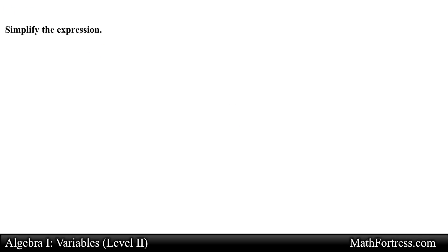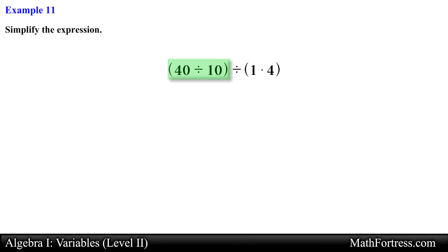Let's try the next one: simplify the quantity (40 divided by 10) divided by (1 times 4). We simplify the expressions within the parentheses first. The left parentheses simplifies to 4 and the right expression within the parentheses also simplifies to 4. So now we need to simplify 4 divided by 4, which is equal to 1.